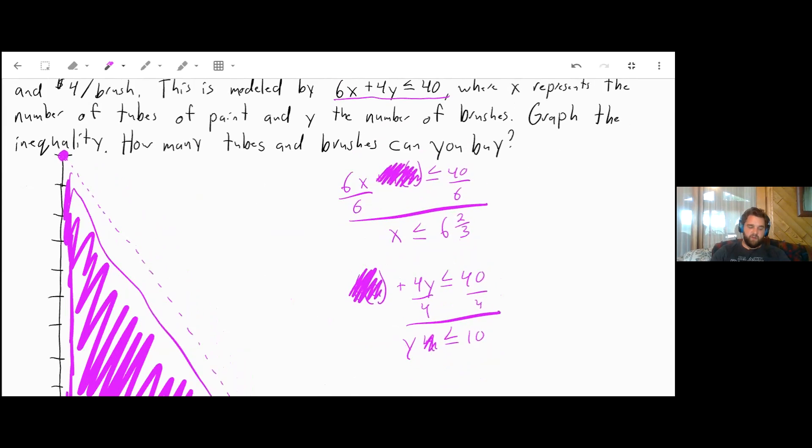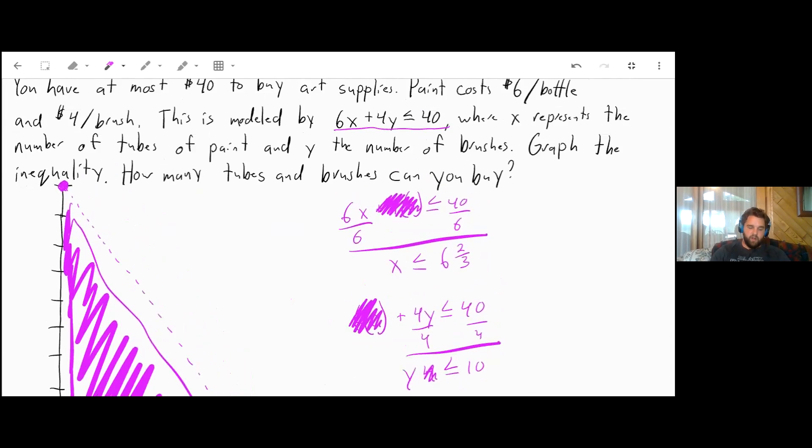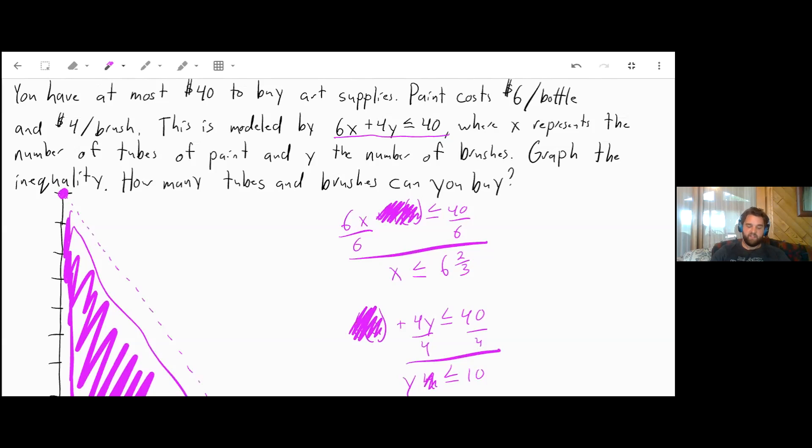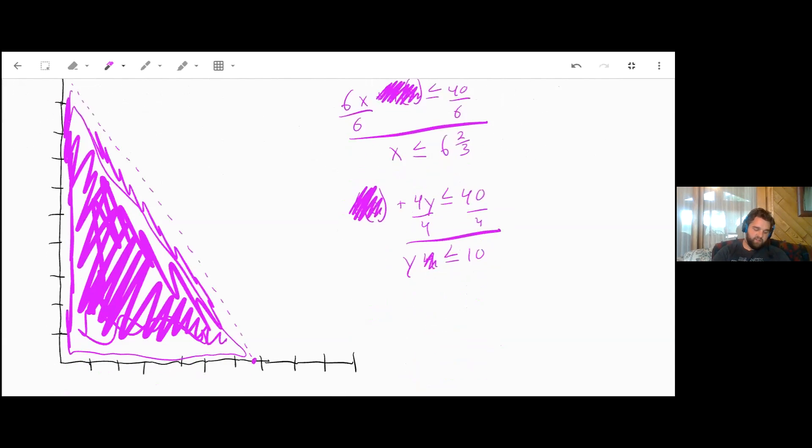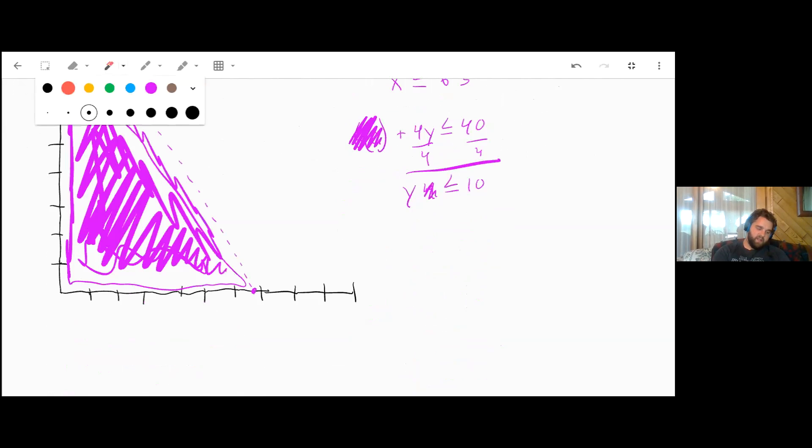How many tubes and brushes can we buy? We can buy up to 10 brushes, 6 tubes, or some combination in between. For example, if we wanted 2 tubes and 4 brushes, that point is less than the dashed line, so it works. As long as the point you pick is within this triangle, you're good. That's all for today. Good luck, and let me know if you have questions.